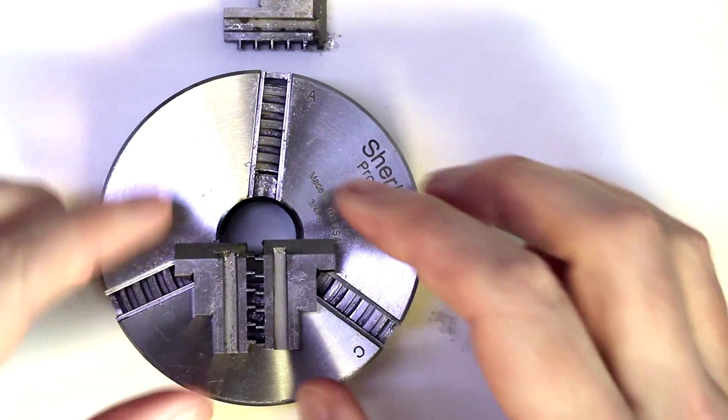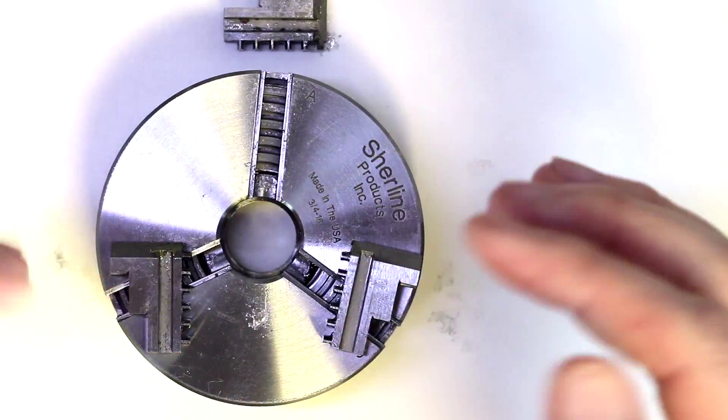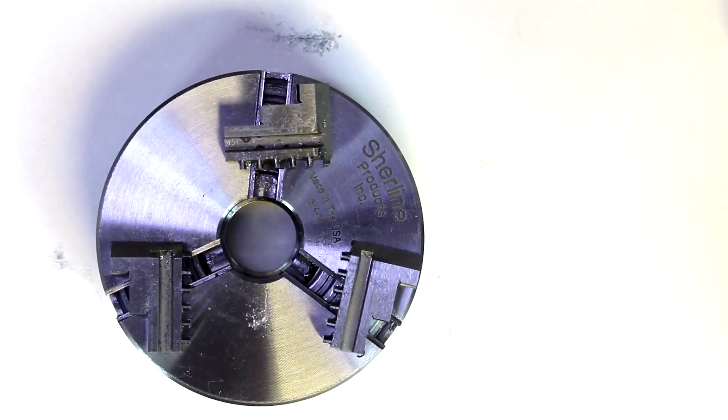This is so that the scroll will engage properly and they'll be centered properly. And each of the three teeth are set up in that way.